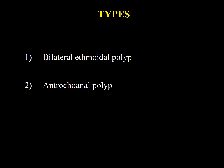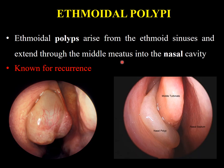There are two types: ethmoidal polypi, which are usually bilateral, and antrochoanal polyp, which is usually unilateral. Ethmoidal polypi arise from the ethmoid sinuses and extend through the middle meatus into the nasal cavity. The middle meatus region is the osteomeatal complex.